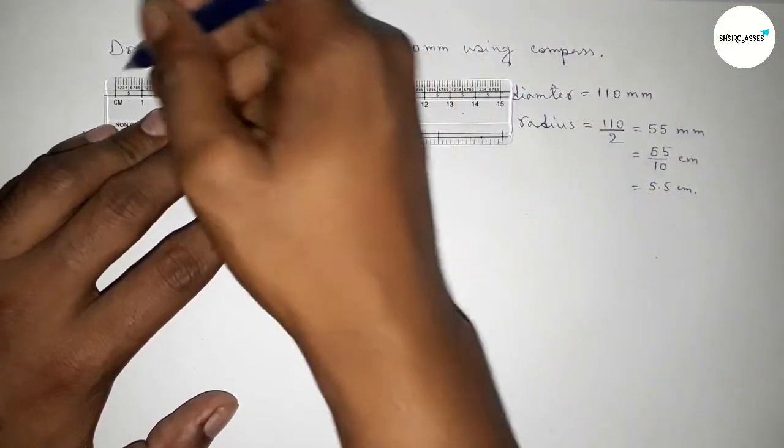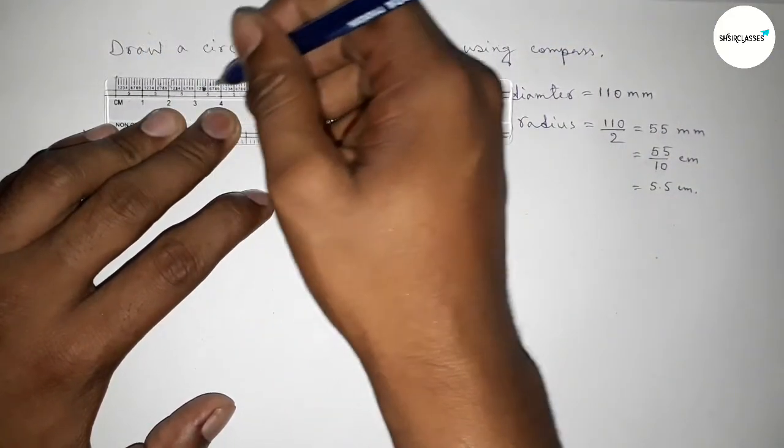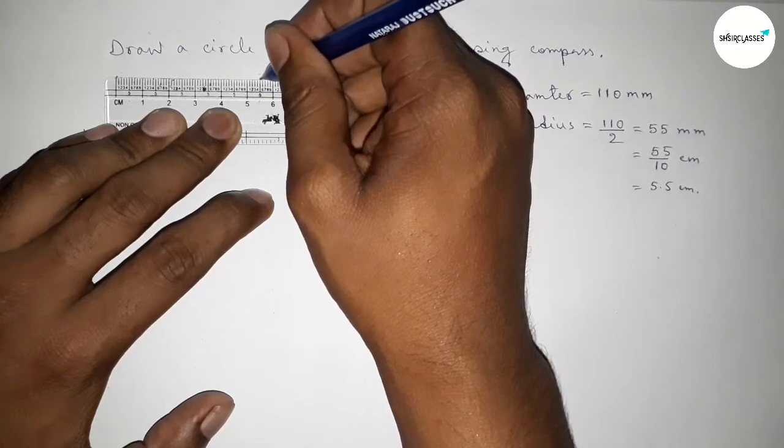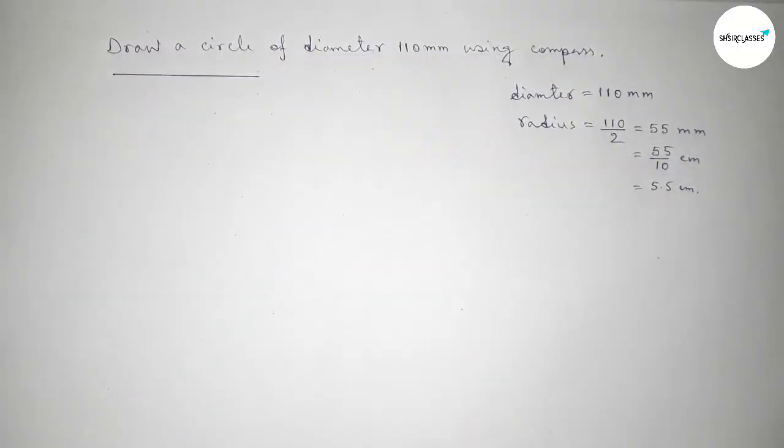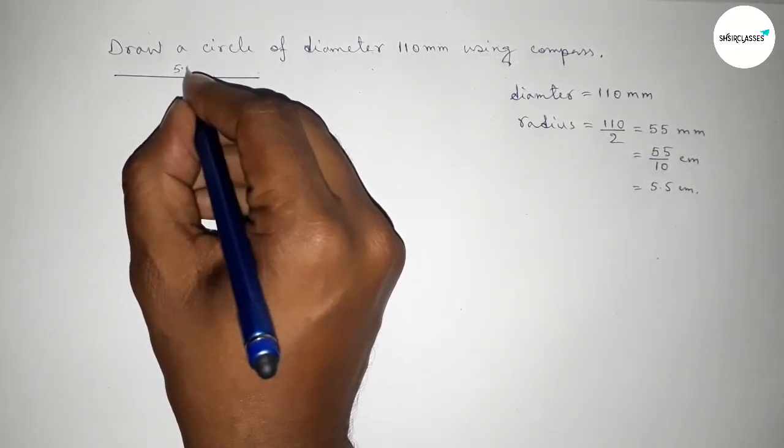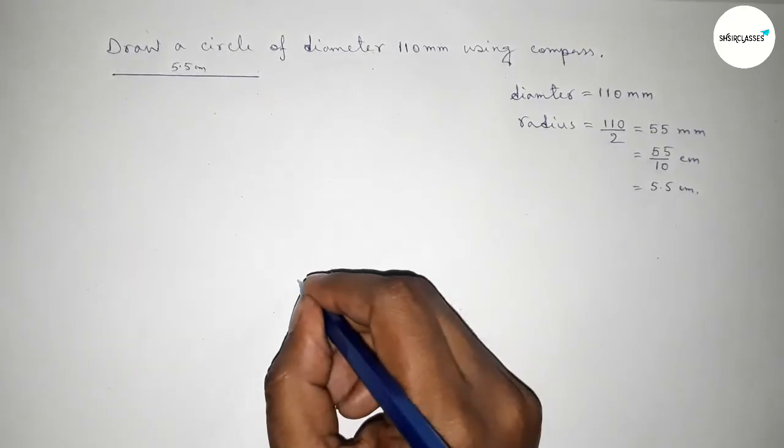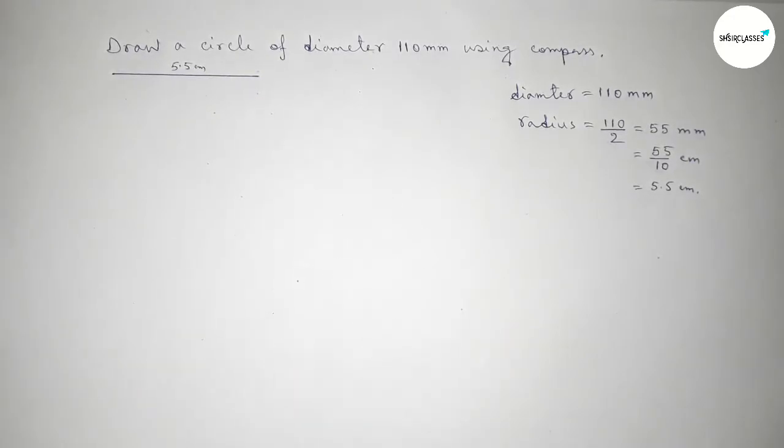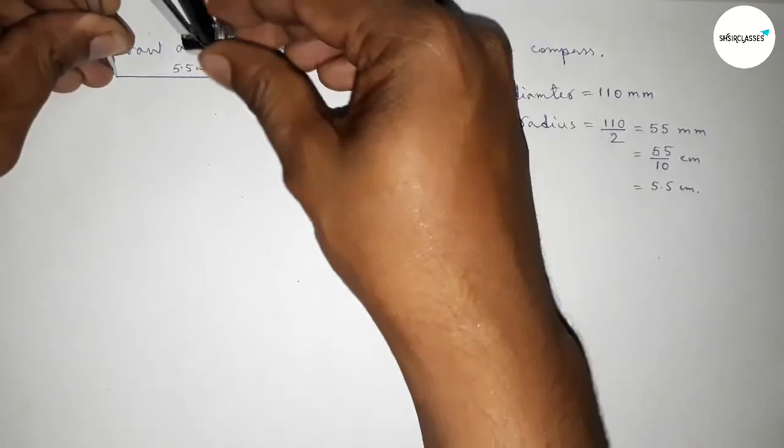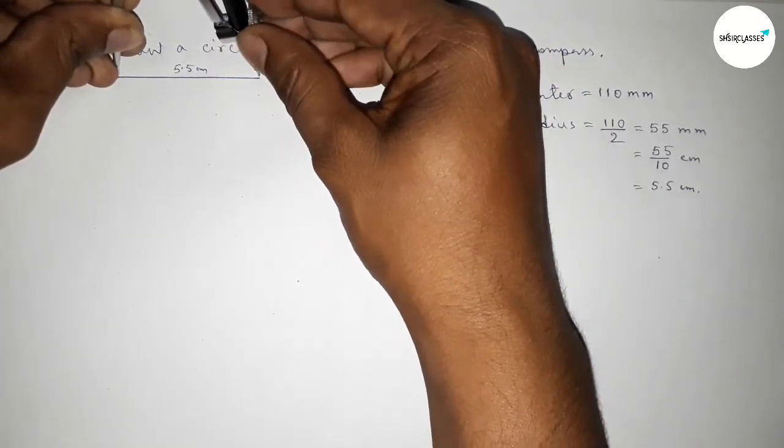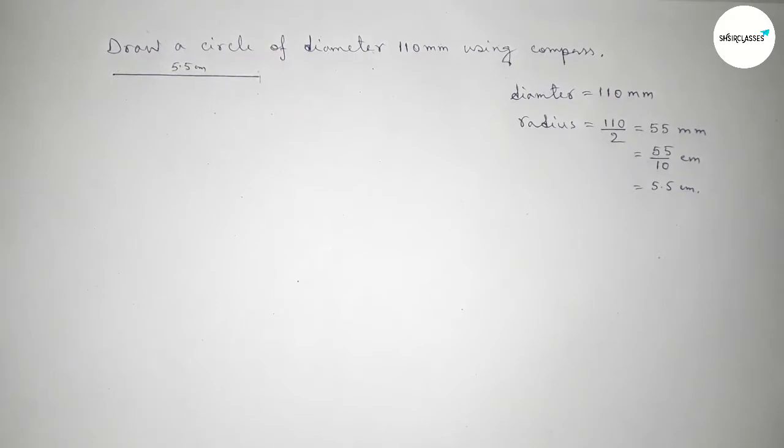Now first we have to draw here a line of length 5.5 centimeter. So this line is 5.5 centimeter. Now taking any point here and setting the compass length to 5.5 centimeter by this way, and putting the compass on the point.